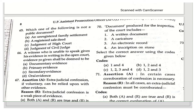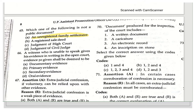The next question asks: which of the following is not a public document? The options are: an unregistered family settlement, a registered sale deed, a judgment of the High Court, and a judgment of a Civil Judge. The correct answer is an unregistered family settlement, because it is unregistered. A registered sale deed, a High Court judgment, and a Civil Judge's judgment are all public documents.